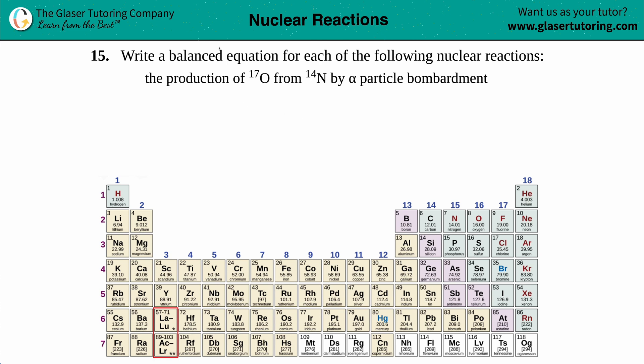Number 15: Write a balanced equation for each of the following nuclear reactions. The production of O-17 from nitrogen (N-14) by alpha particle bombardment. Let's write this balanced equation - it's a nuclear reaction we're talking about, just atoms in general with some type of particle bombardment or emission.